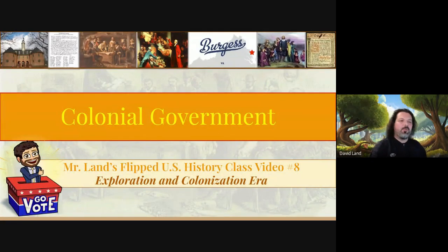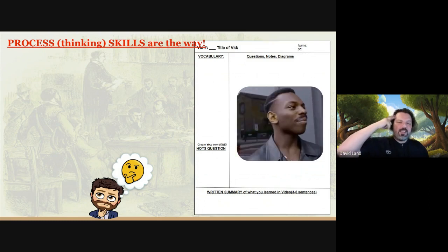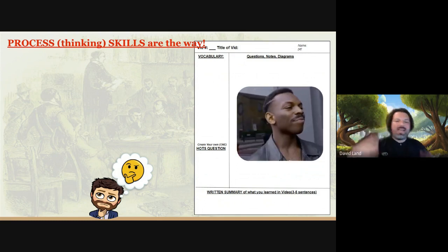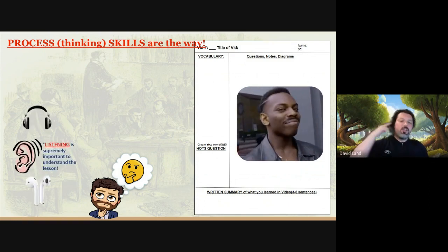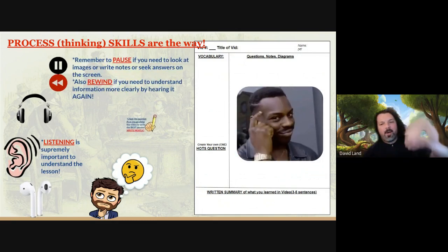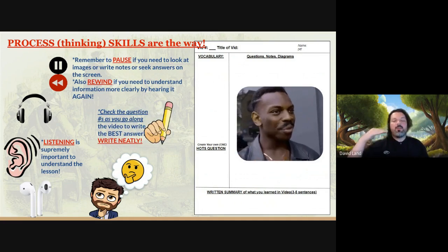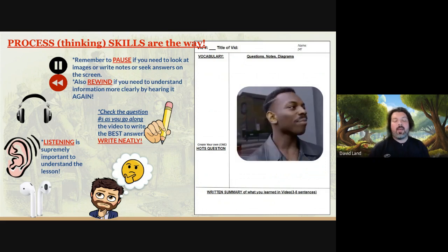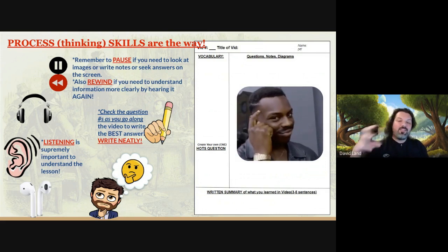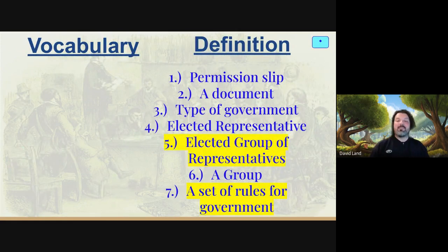In today's video, we're getting into something that I love, which is the topic of government. But first, kids, we got to do some of these process skills. Make sure by now you've already been with me on this journey. You know how to listen, how to read, how to write. But you know you got to pause and rewind if you miss something — you got to think about it, pause and rewind. Check those questions on your Cornell notes as you go through the lesson. I'm leaving you those answers. I want you to learn it, get it, and I want it to be easy for you.